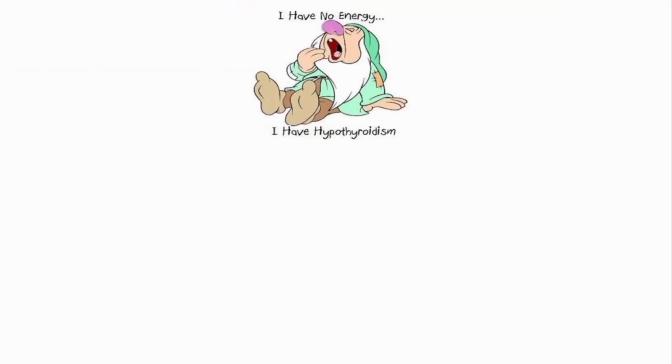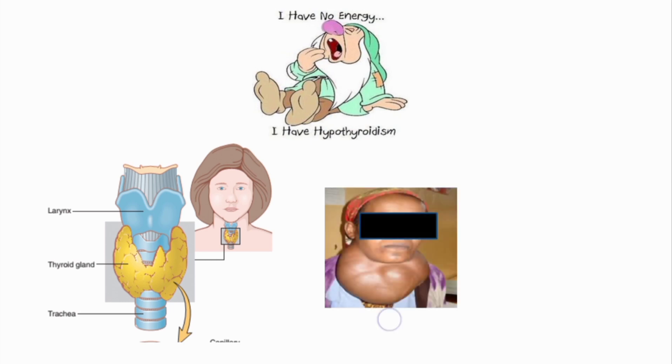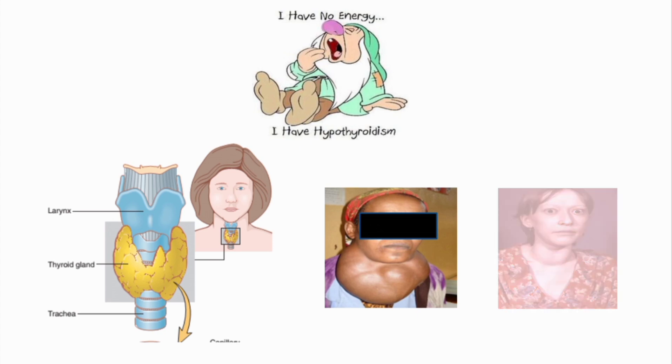Hypothyroidism means that there is decreased secretion of thyroid hormones, that is T3 and T4, from the thyroid gland. Usually hypothyroidism is associated with enlargement of the thyroid gland, which is also called goiter. Goiter can also be seen sometimes in hyperthyroidism, but hyperthyroidism is a less common cause of goiter. Usually the goiter or enlargement of the thyroid gland is seen in hypothyroidism.